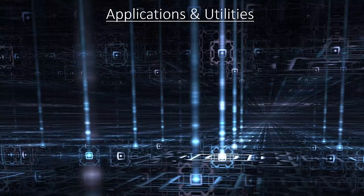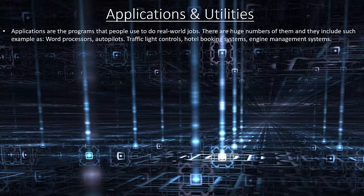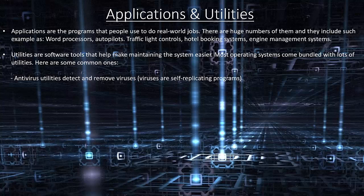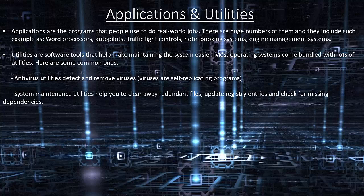Applications and utilities. Applications are the programs that people use to do real-world jobs. Examples include word processors, autopilots, traffic light controls, hotel booking systems and engine management systems. Utilities are software tools that help make maintaining the system easier. Most operating systems come bundled with many utilities. Common utilities include antivirus utilities, system maintenance utilities and disc organisation utilities.